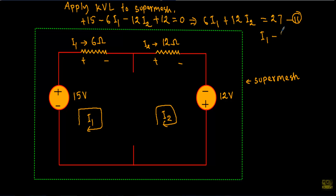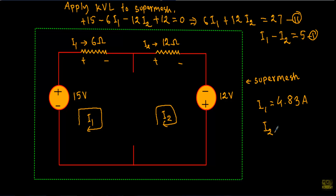With Equation 1 (I1 − I2 = 5) and Equation 2 (6I1 + 12I2 = 27), solving simultaneously gives I1 = 4.83 A and I2 = −0.1667 A.